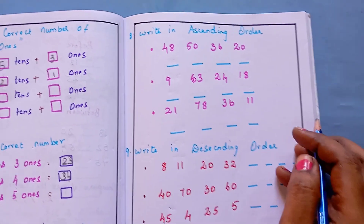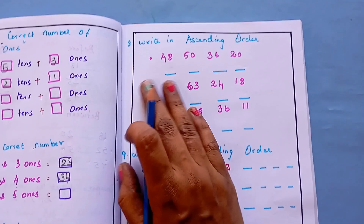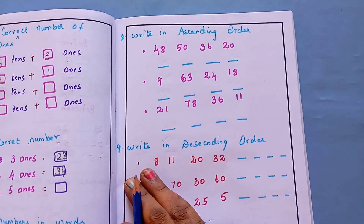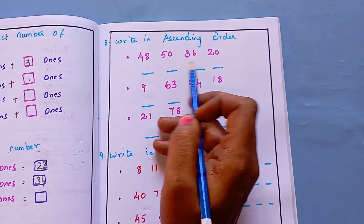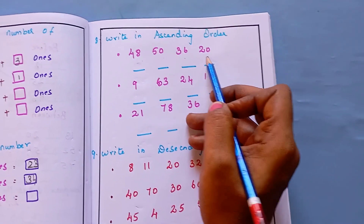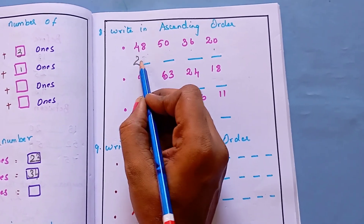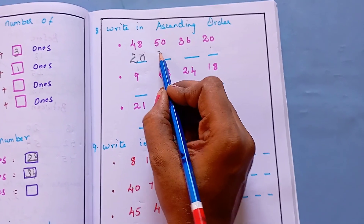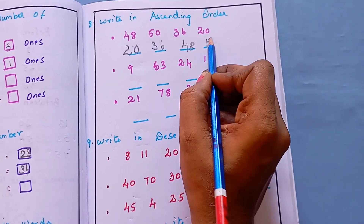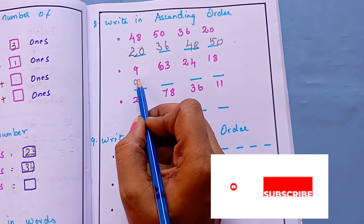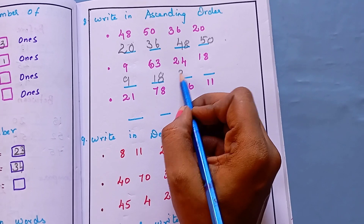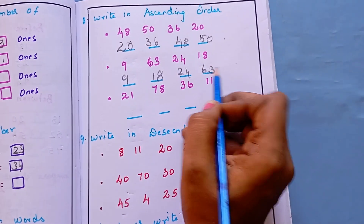The next question is: write in ascending order. Here I have given some numbers and the kid has to write them in ascending order. Ascending order means from small to big. The numbers are 48, 50, 36, and 20 — so 20 is the smallest number, so first they write 20, then 36, then 48, then 50. Like this, they have to compare all the numbers and go from smallest upward.